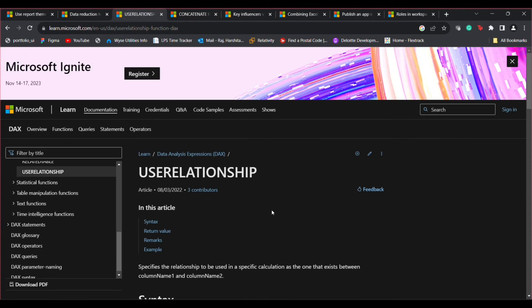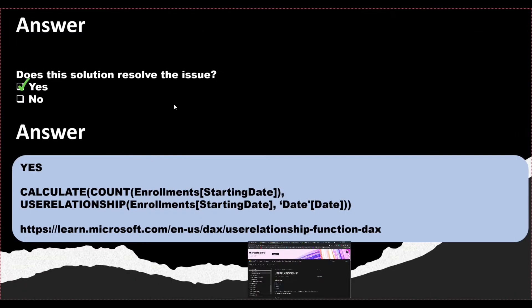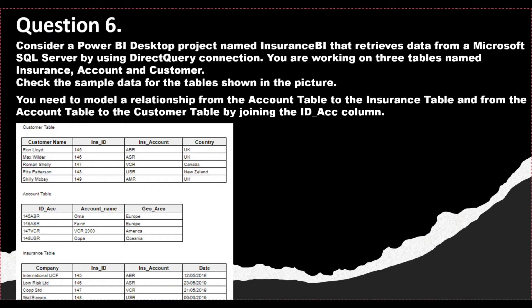Question number six: consider a Power BI Desktop project named Insurance BI that retrieves data from Microsoft SQL Server using a Direct Query connection. You're working on three tables named Insurance, Account, and Customer. You need to model a relationship from the Account table to the Insurance table and from the Account table to the Customer table by joining on the ID account column.